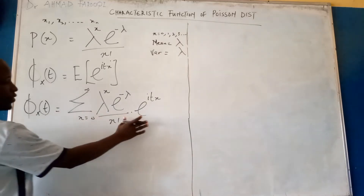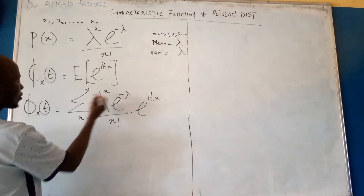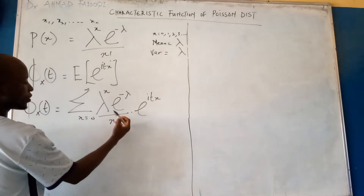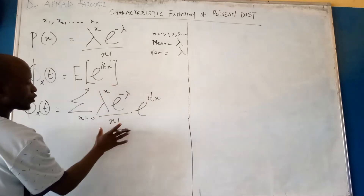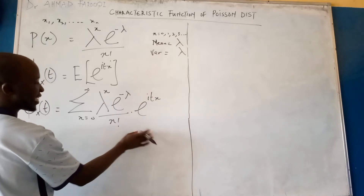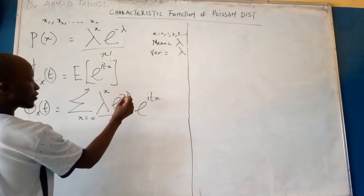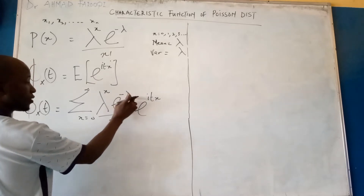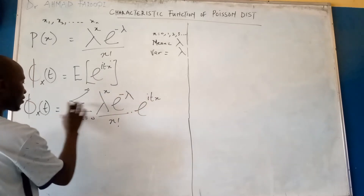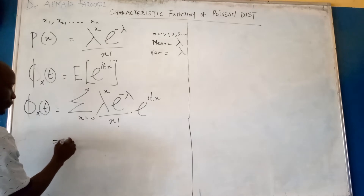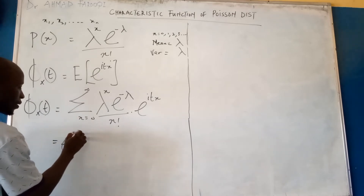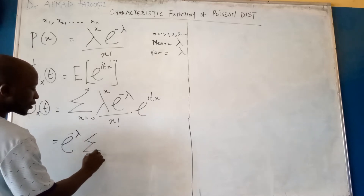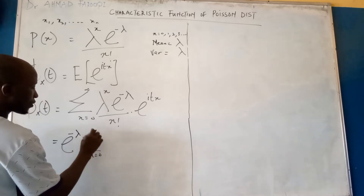Now if you look at this expression, the random variable x appears in some terms but not others. The term lambda times exponential minus lambda has nothing to do with x, so we can bring it outside the summation.